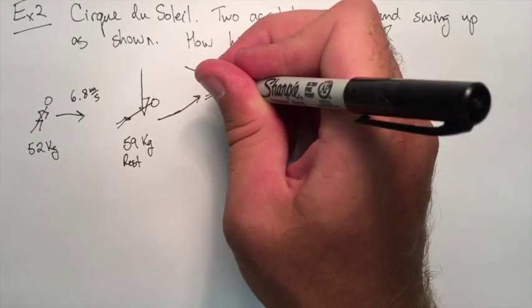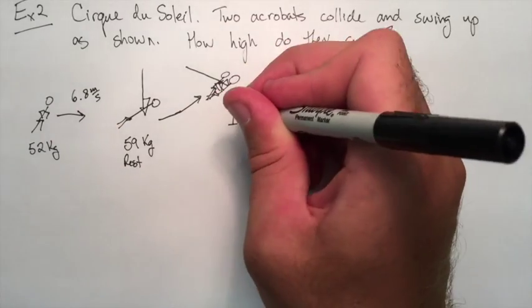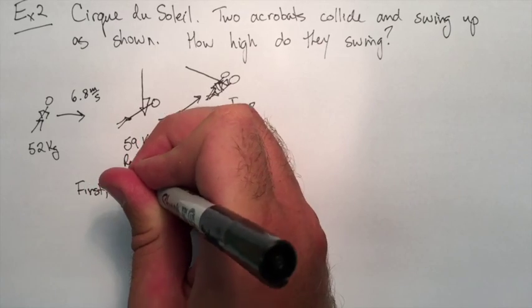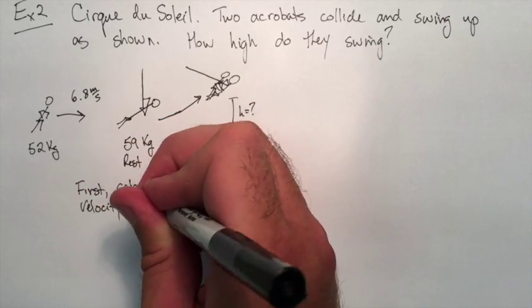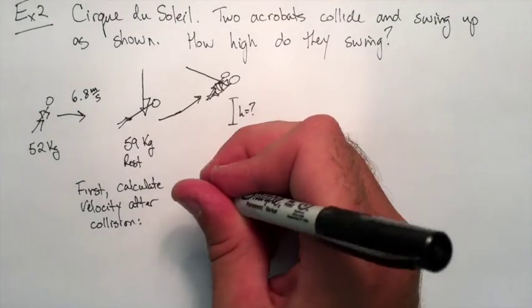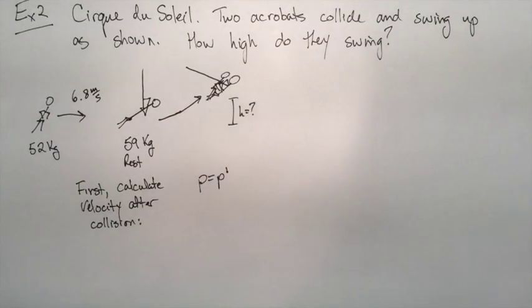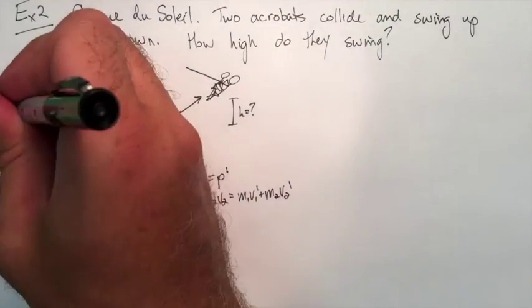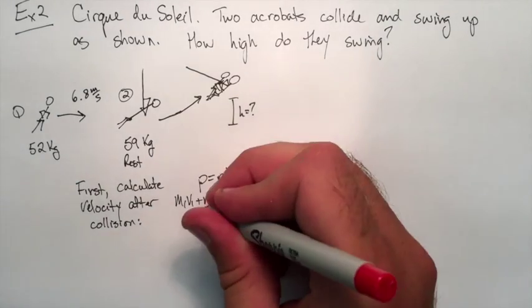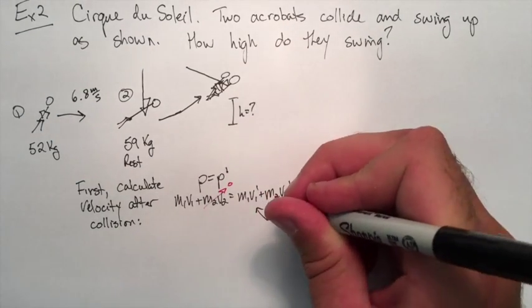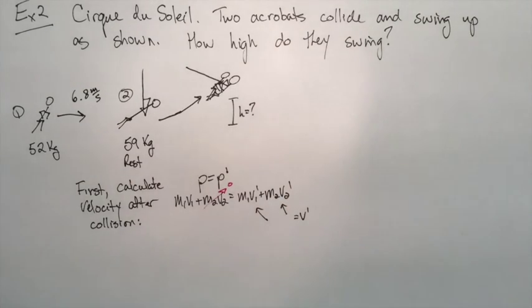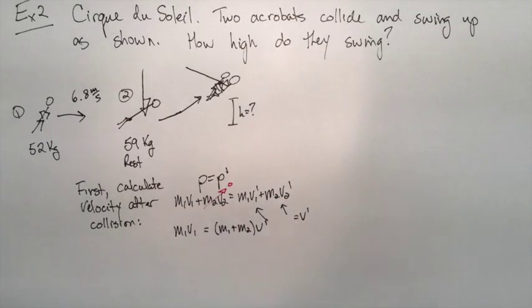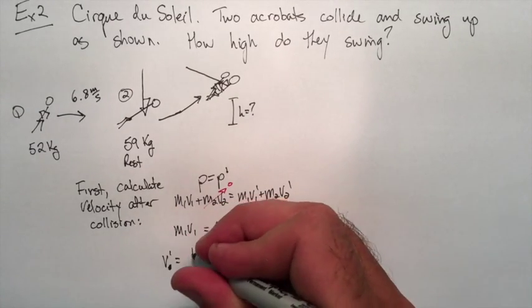We're going to try and calculate what that height is. It's sort of the opposite method from that previous example. First, we have all the information for the collision, so let's try and find the velocity after the collision. Momentum of the first person plus momentum of the second person. Again, they combine, so the V's we can sub out and just call it V prime. The hanging person is at rest to begin with too, so that can go to zero. We're going to solve for V prime.